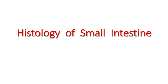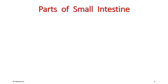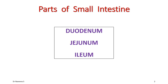Welcome to this video tutorial on histology of the small intestine. The small intestine has three parts: duodenum, jejunum, and ileum. We will be looking into the details of the histological features of these three parts.